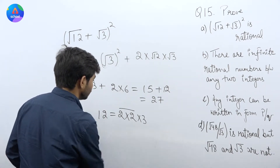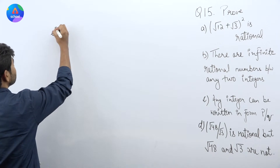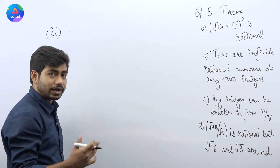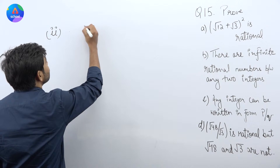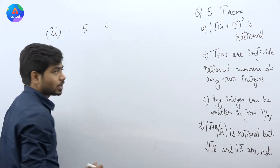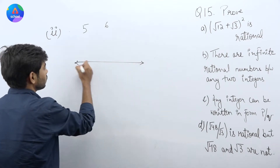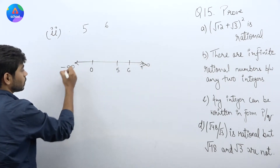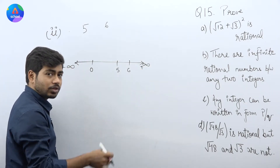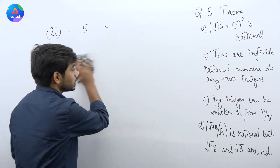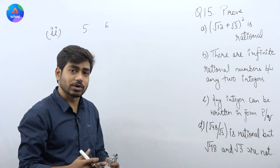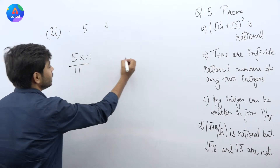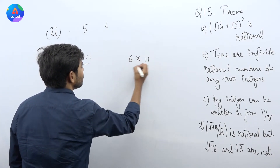Coming to the next part: there are infinite rational numbers between any two given integers. किसी भी दो integers के बीच में कई सारे rational numbers हो सकते हैं। Let us say the integers are 5 and 6. 5 और 6 के बीच में कई सारे rational numbers lie करते हैं। इसे prove करने के लिए, either you can multiply and divide by 11.